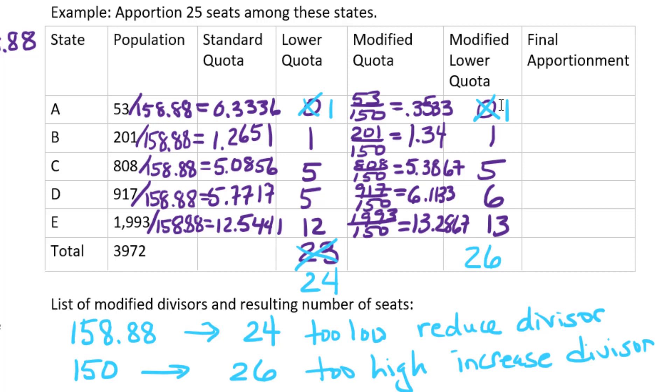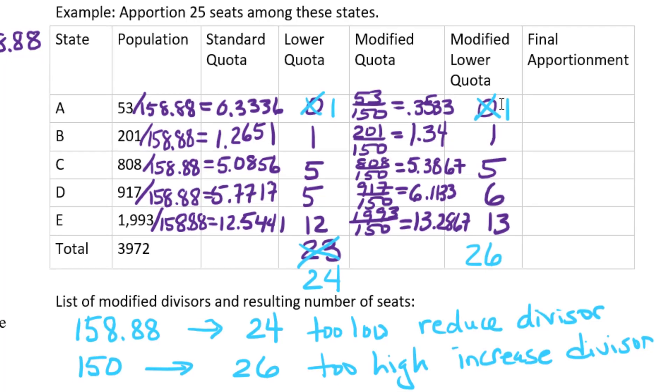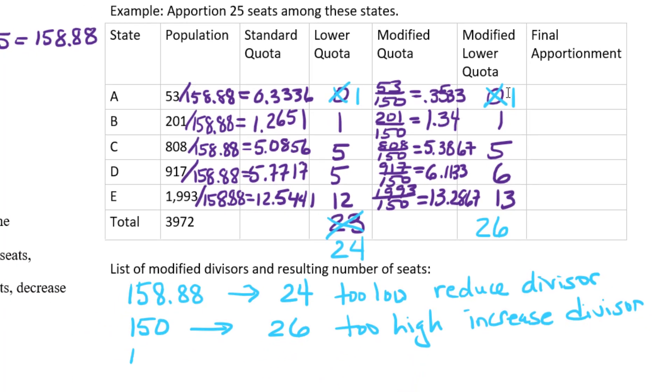What kind of guess am I going to make now? Well, I know it's somewhere between 150 and 158.88, so it's totally up to you what you're going to decide. You could do 155, you could do 157, whatever you want. I'm going to pick 153 this time.